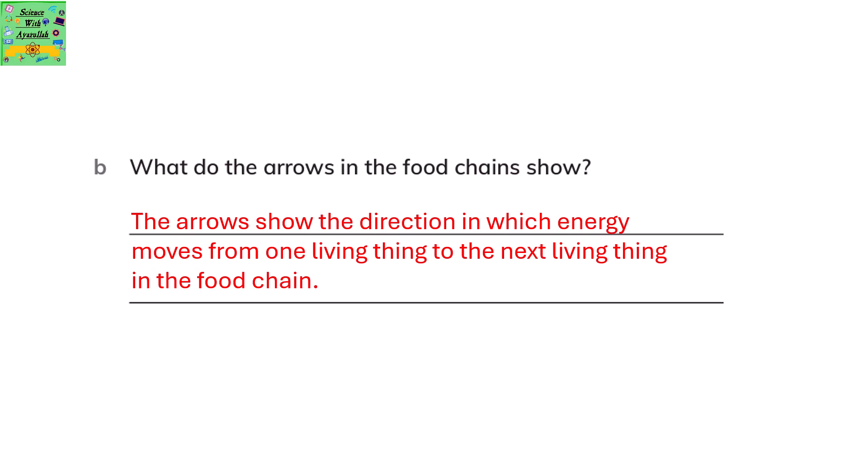What do the arrows in the food chains show? The arrows show the direction in which energy moves from one living thing to another living thing in the food chain.